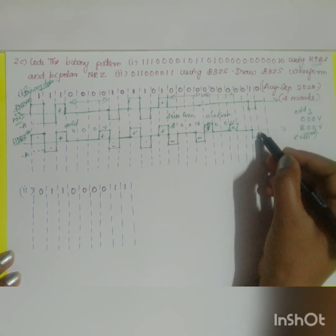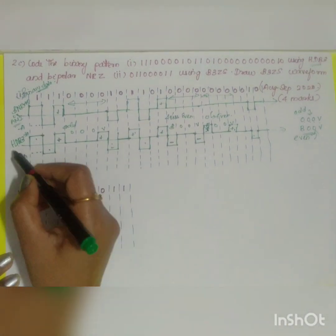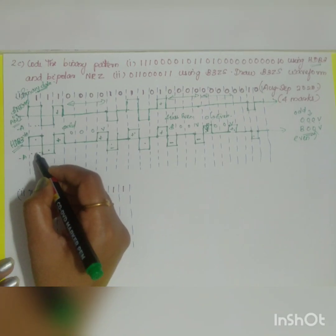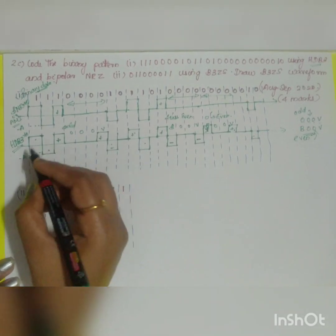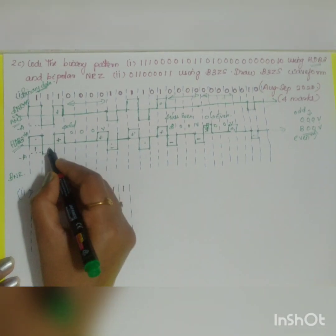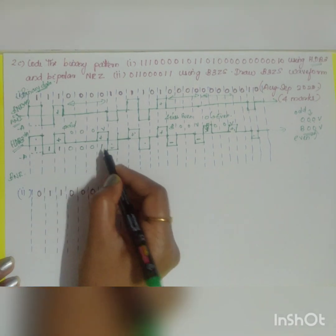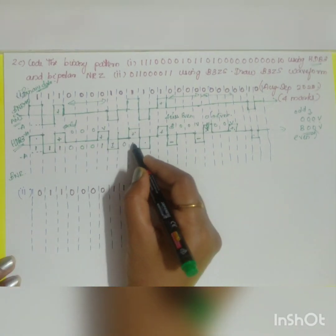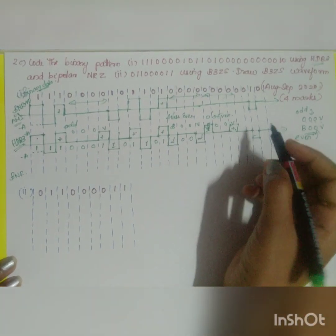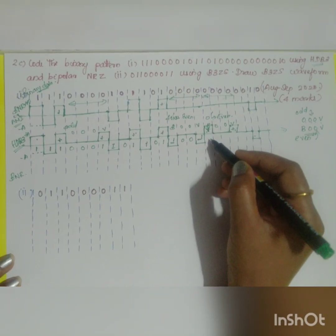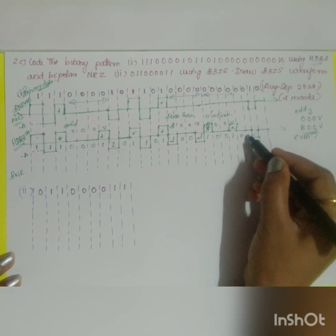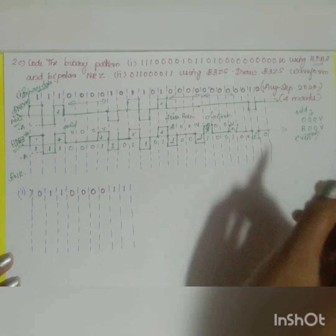The next one is positive, so the next one will be negative. This is your HDB3 code. Now to draw the bipolar non-return to zero for this HDB3 coded data, let me write out the data: 1 1 1 0 0 0, then 1 1 0 1 1 0 1 1 0 1 1 0 0 1, with violations written as 1, so 1 0 0 1 0 0 1 0.